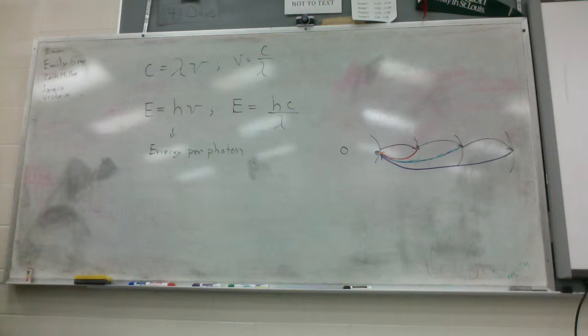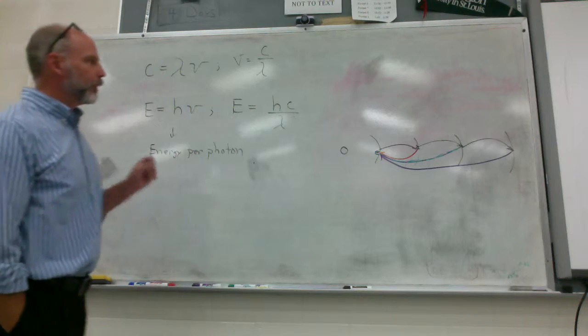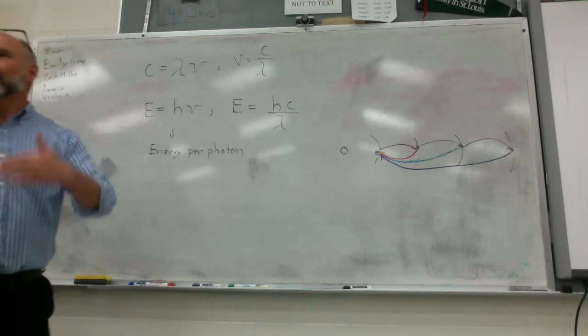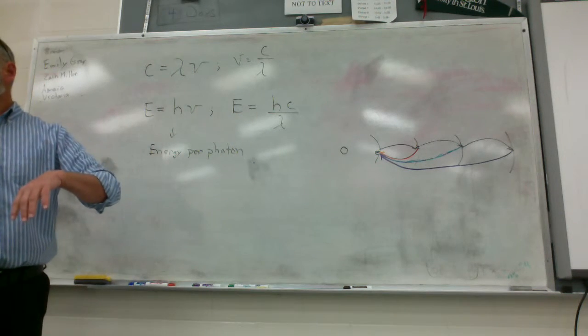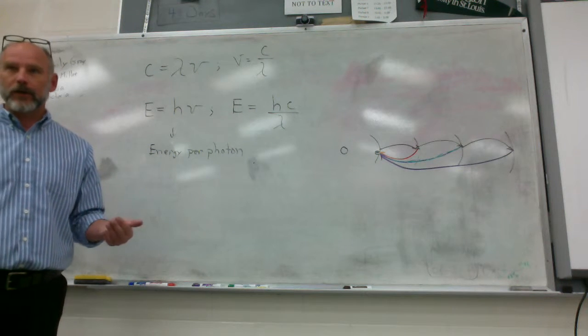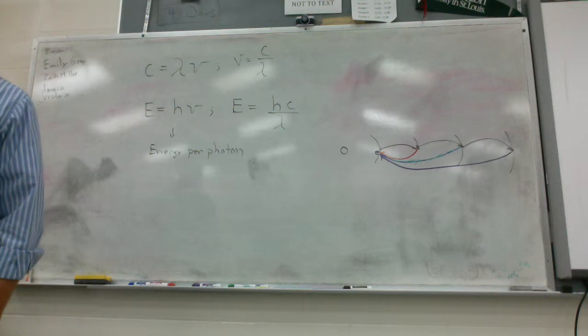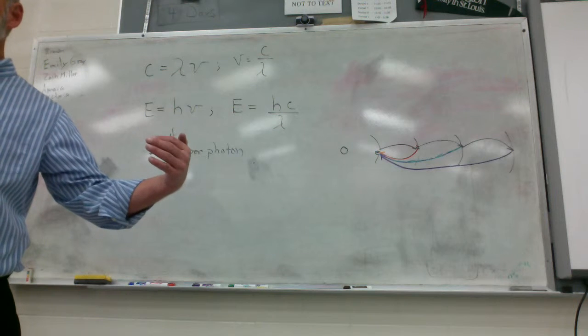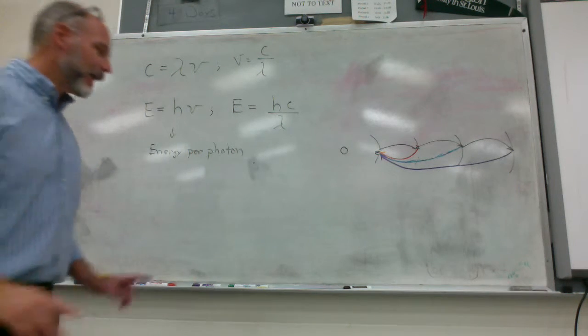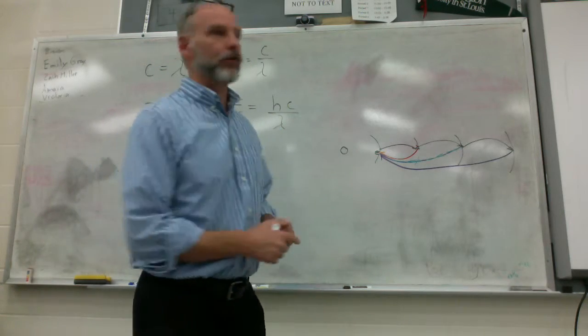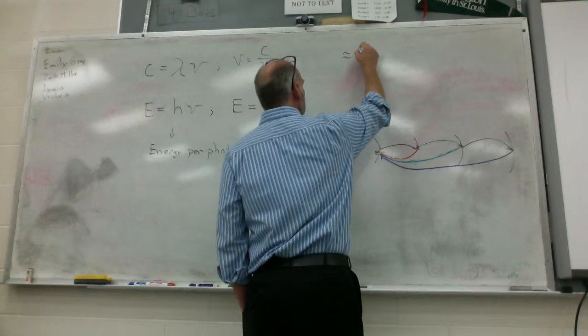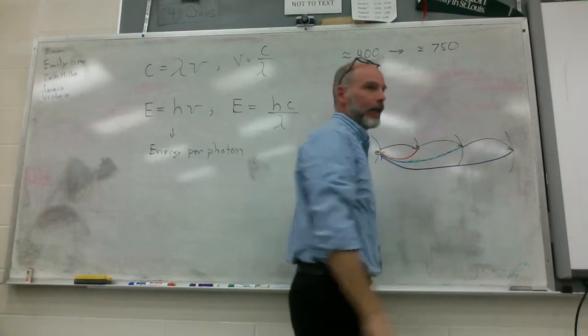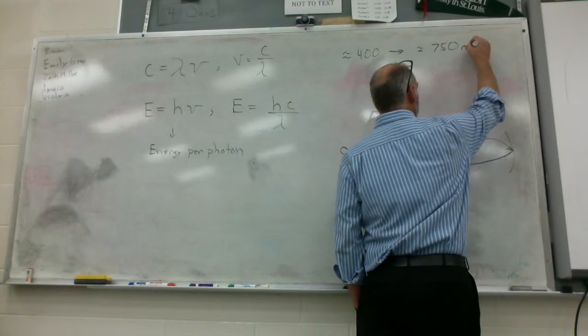So now what we're going to do, I'm going to throw one more equation at you. What we're going to be able to do is predict what colors we're going to see based on the number of energy levels that these electrons have come from. We're actually going to be able to calculate this. Some of you asked me, I think, what do the numbers mean on the side? Like, seven. There should have gone from a four to a seven. Does anyone remember that?